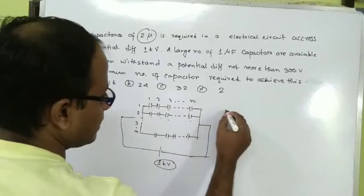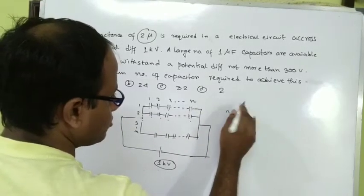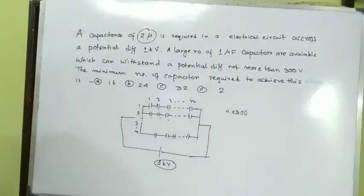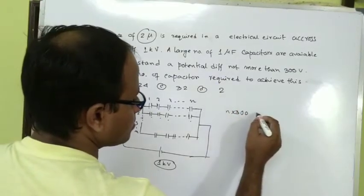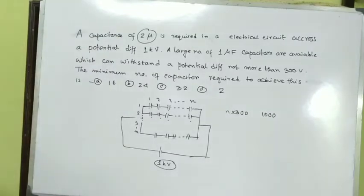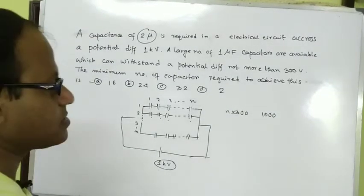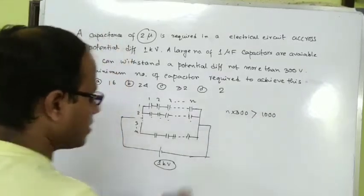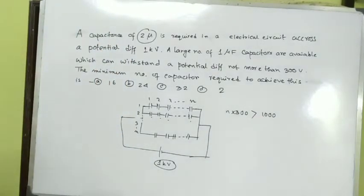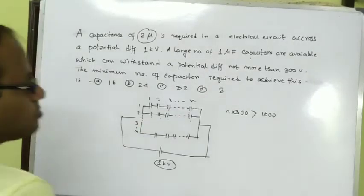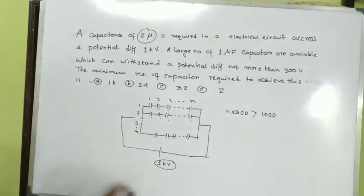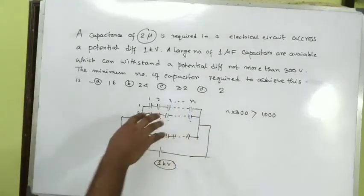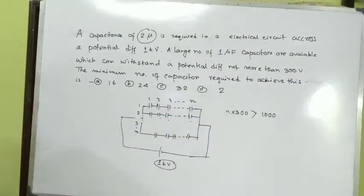The voltage is 1000 volts total. Each capacitor can withstand only 300 volts maximum. So we need n capacitors in series where n times 300 must be greater than or equal to 1000.